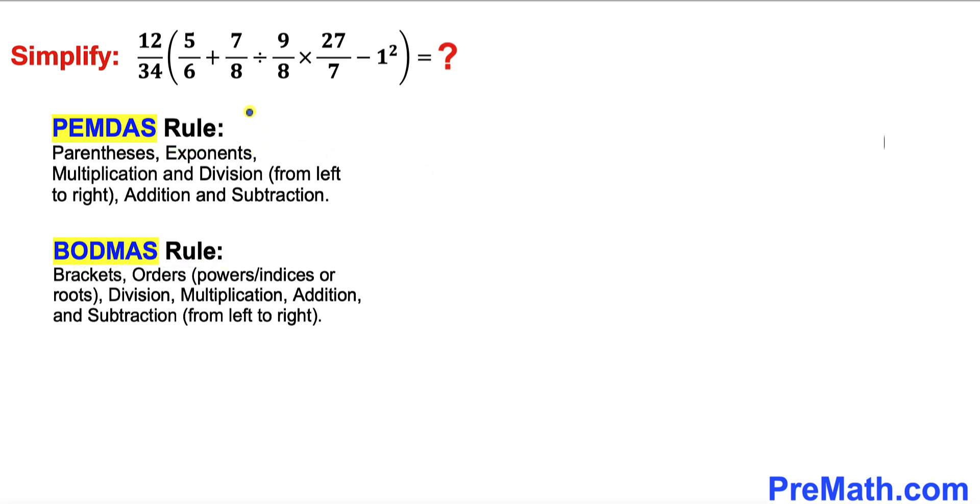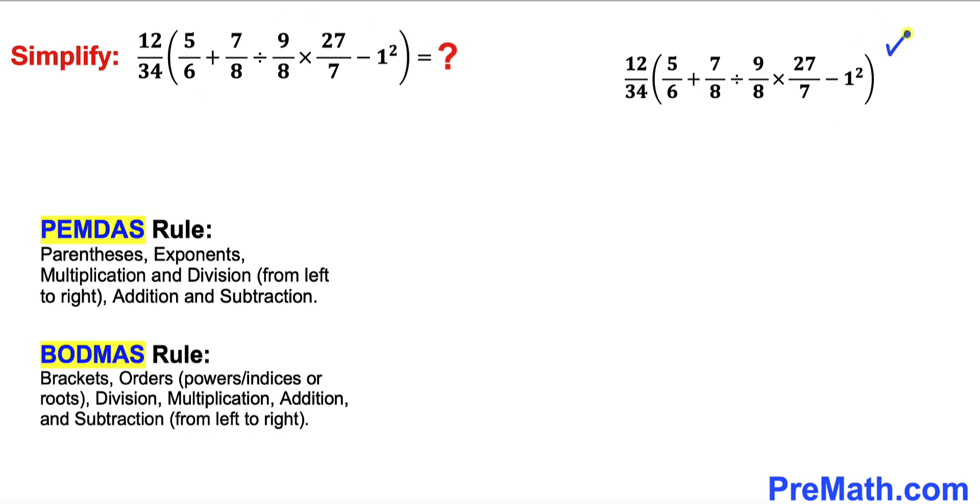According to these rules we always go from left to right. Now let's focus on this given expression. The very first thing we're supposed to look at is the parentheses, so we are going to work inside this parentheses. Then comes the exponent, so let's focus on this exponent 1 power 2, and 1 power 2 is simply 1.